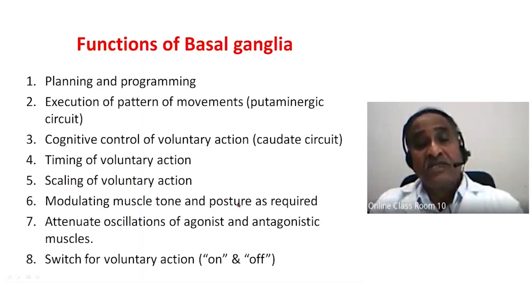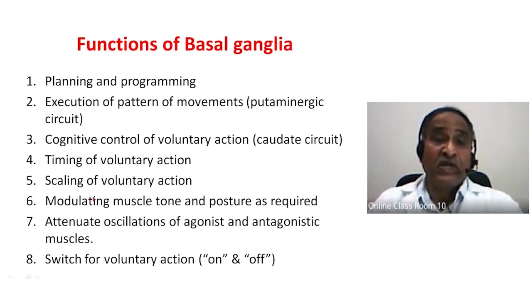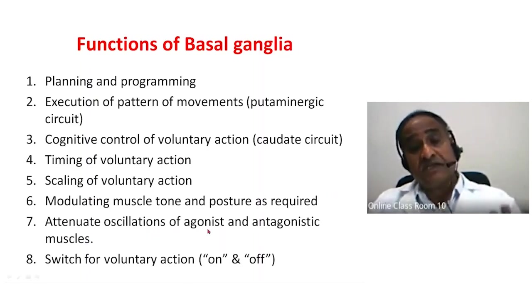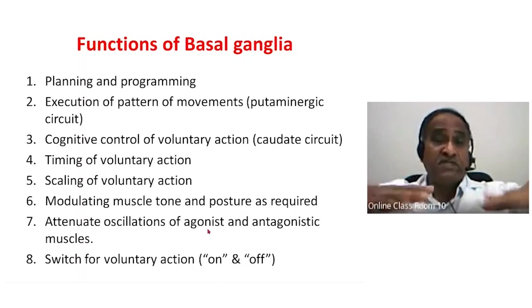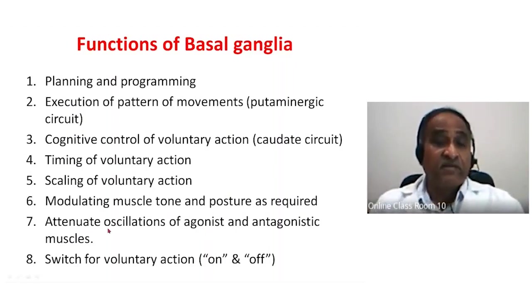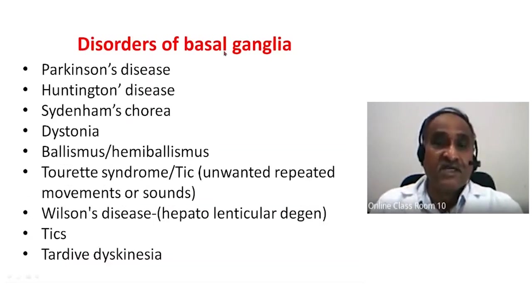Sixth is modulating muscle tone and posture as required — every action is associated with a posture that must be modulated according to the plan. Seventh is dampening the oscillations of agonist and antagonist muscle groups — these continuous oscillations are suppressed by the basal ganglia, which is why we do not have tremors. Eighth is the basal ganglia acting as a switch for voluntary action, either turning on or turning off.